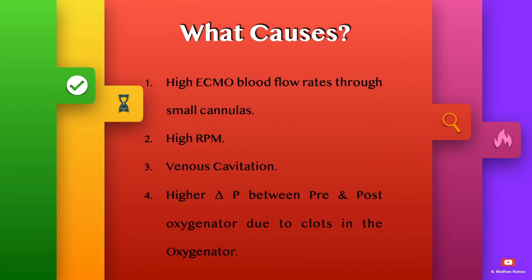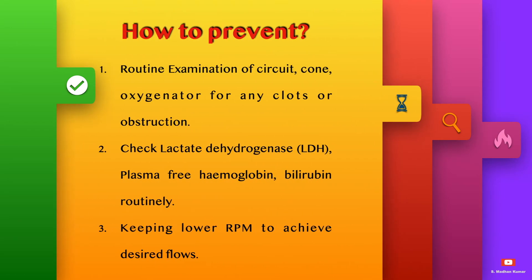Hemolysis can be caused due to high ECMO blood flow rates through smaller cannulas, high RPM, venous cavitation, and higher delta P maintained between pre and post oxygenator due to clots in the oxygenator.